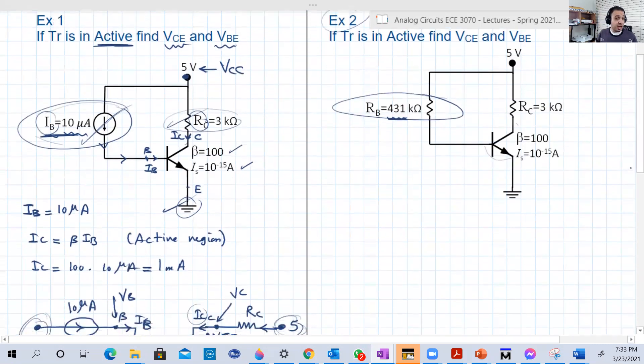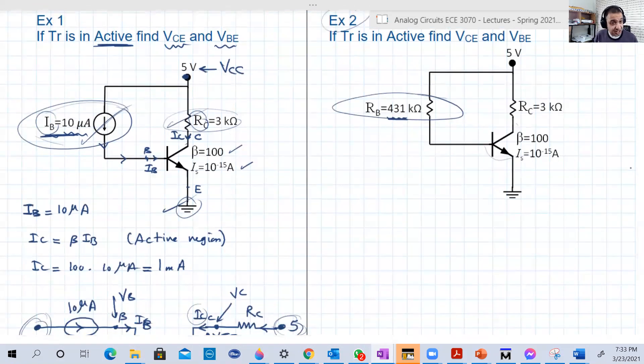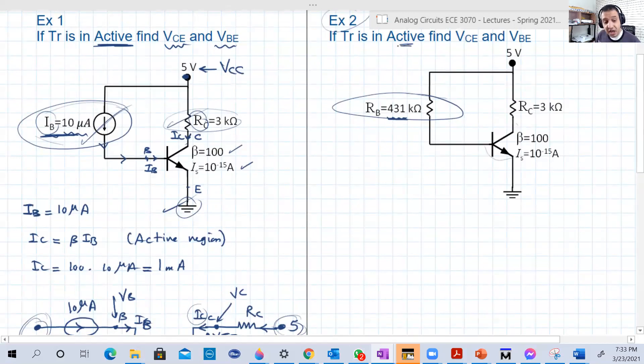So again, we're going to use the equivalent circuit model for the transistor. We remove the transistor and put its equivalent circuit. And again, this guy is working in the active region, so we're going to use the same equivalent circuit of the active region. So we have the base, we have the collector, and we have the emitter.